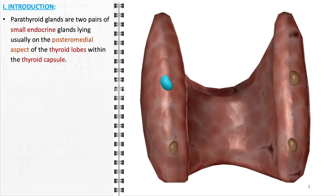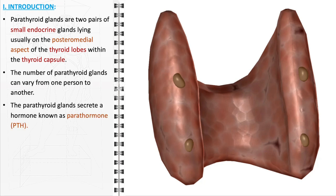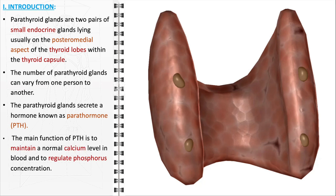Parathyroid glands, typically found as two pairs, are small endocrine glands situated on the posteromedial aspect of the thyroid lobes, encapsulated within the thyroid's protective covering. Interestingly, the number of these glands can vary among individuals, deviating from the common configuration of four. These glands have a critical function in the human body, primarily involving the secretion of parathormone, known as PTH. This hormone plays a pivotal role in maintaining the body's calcium and phosphorus balance.